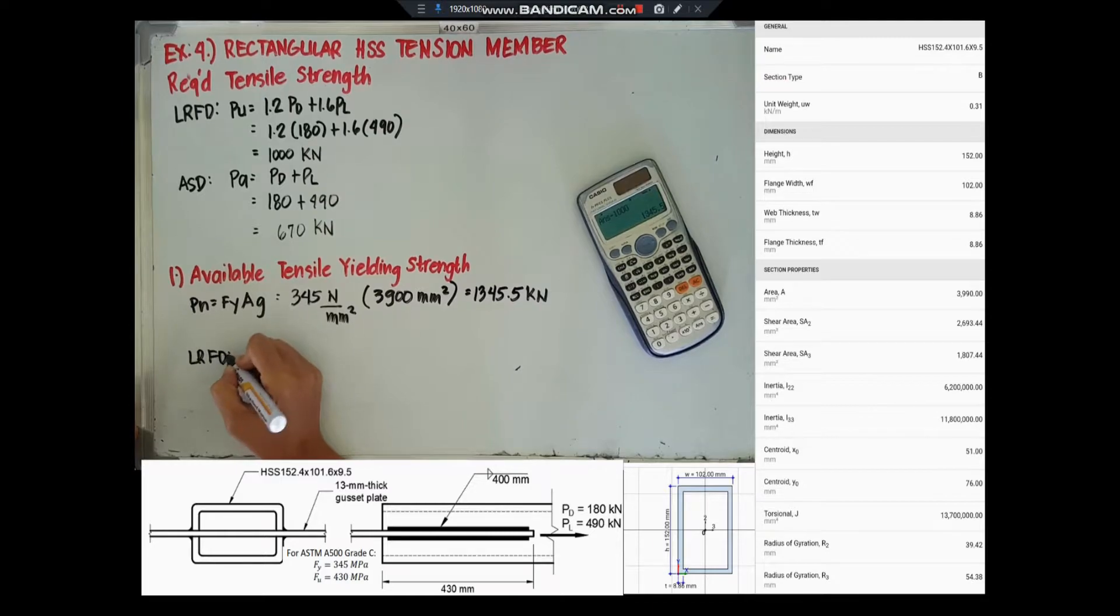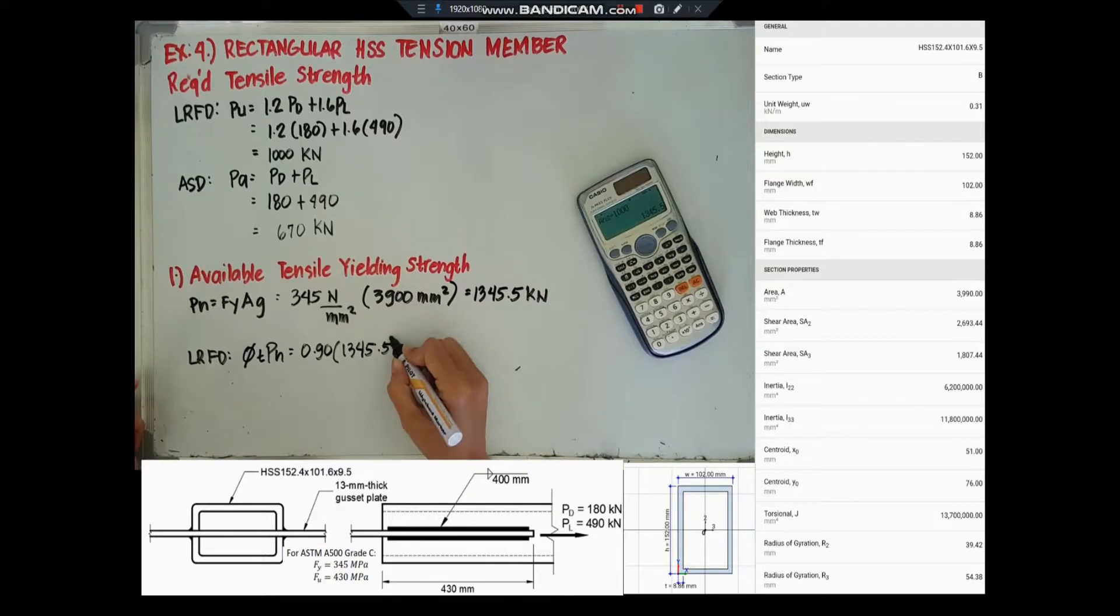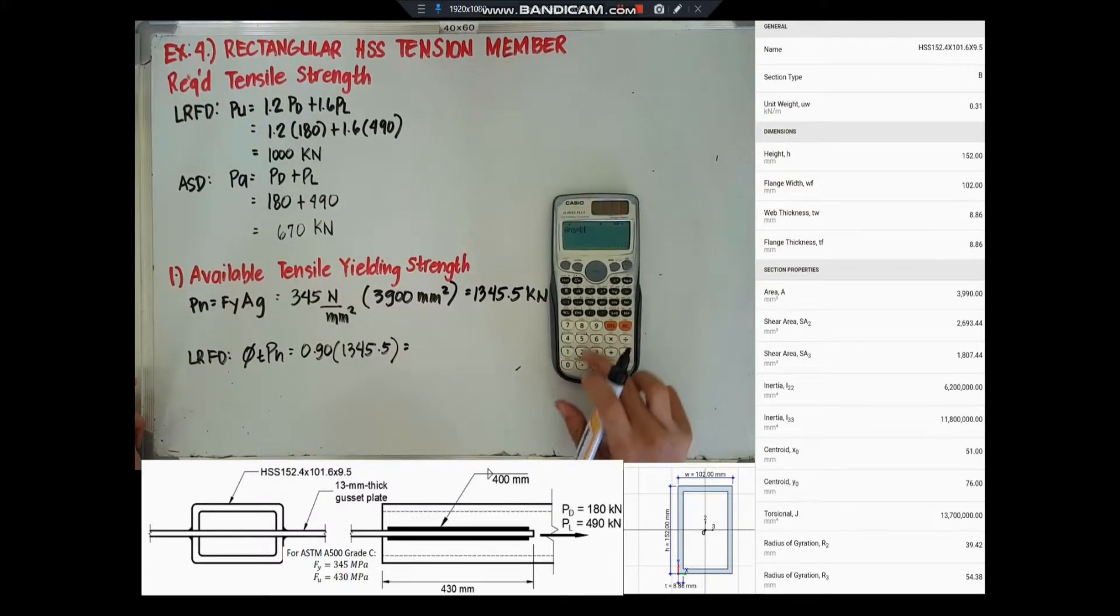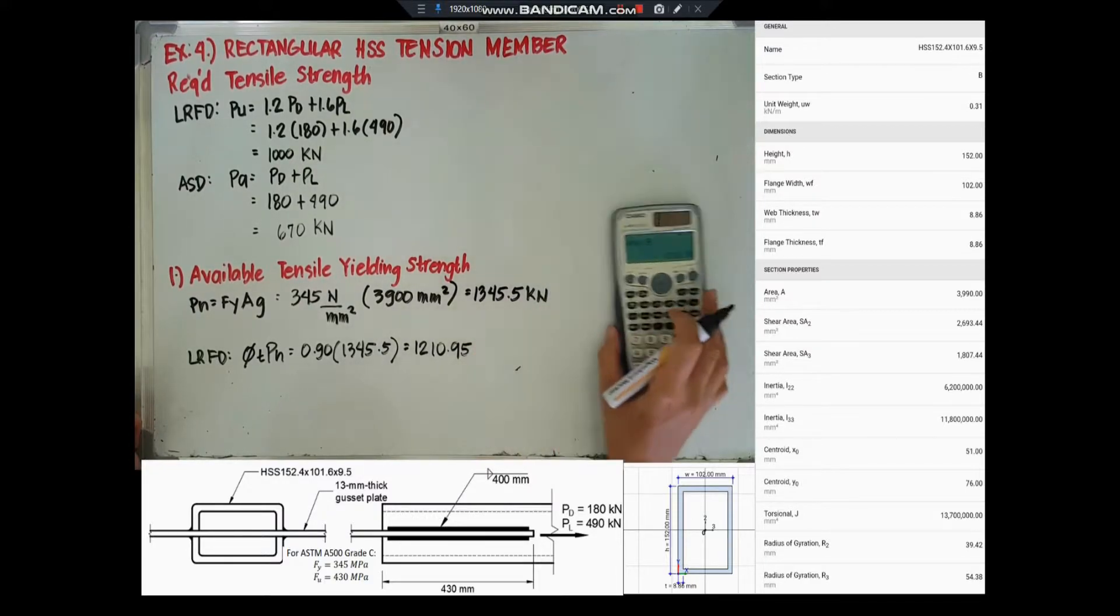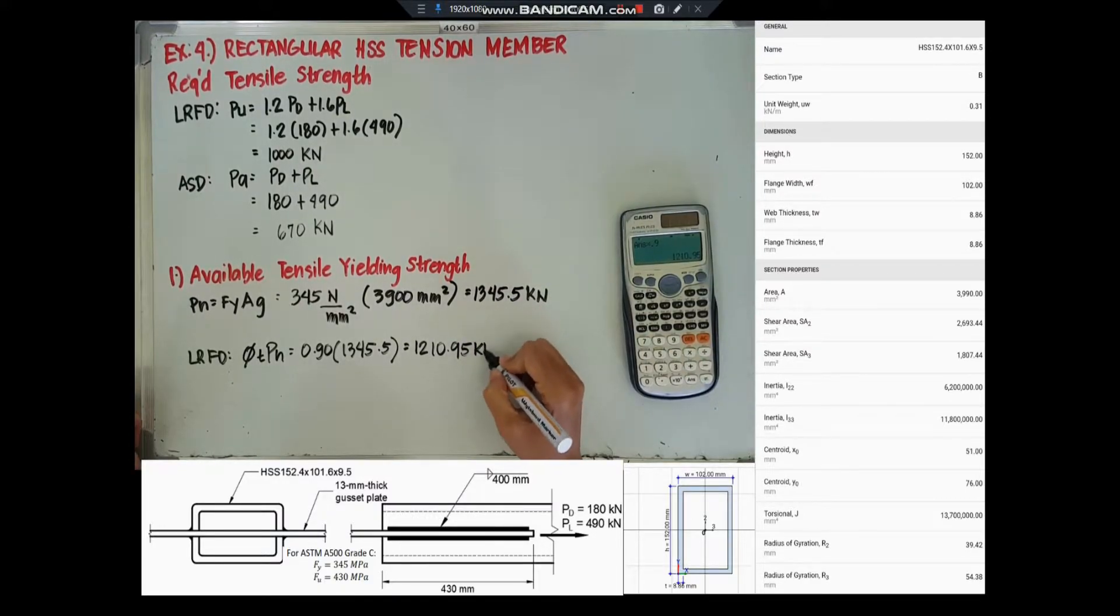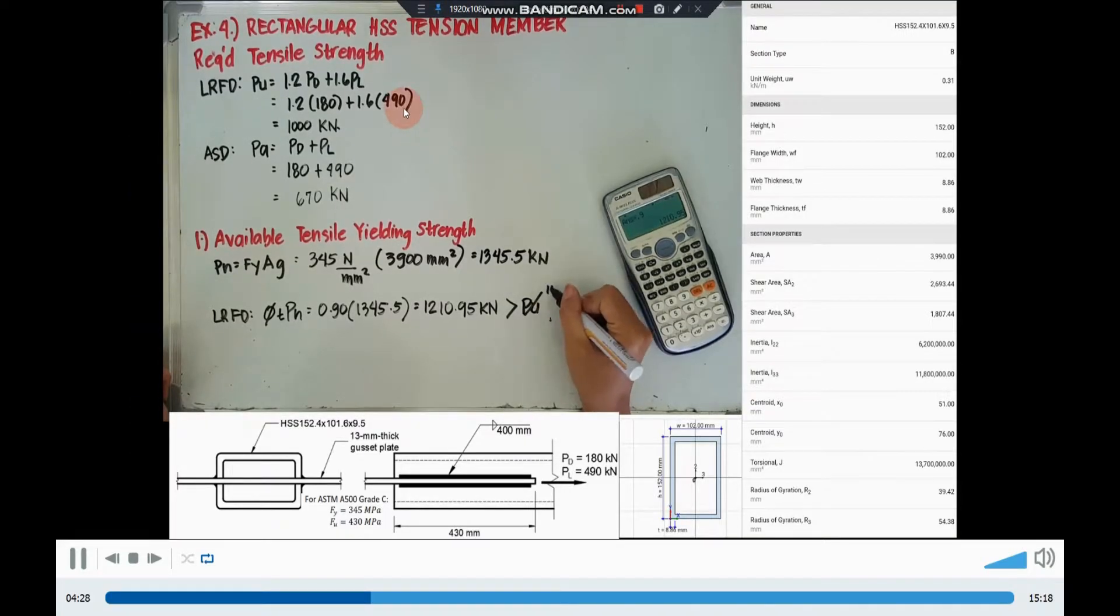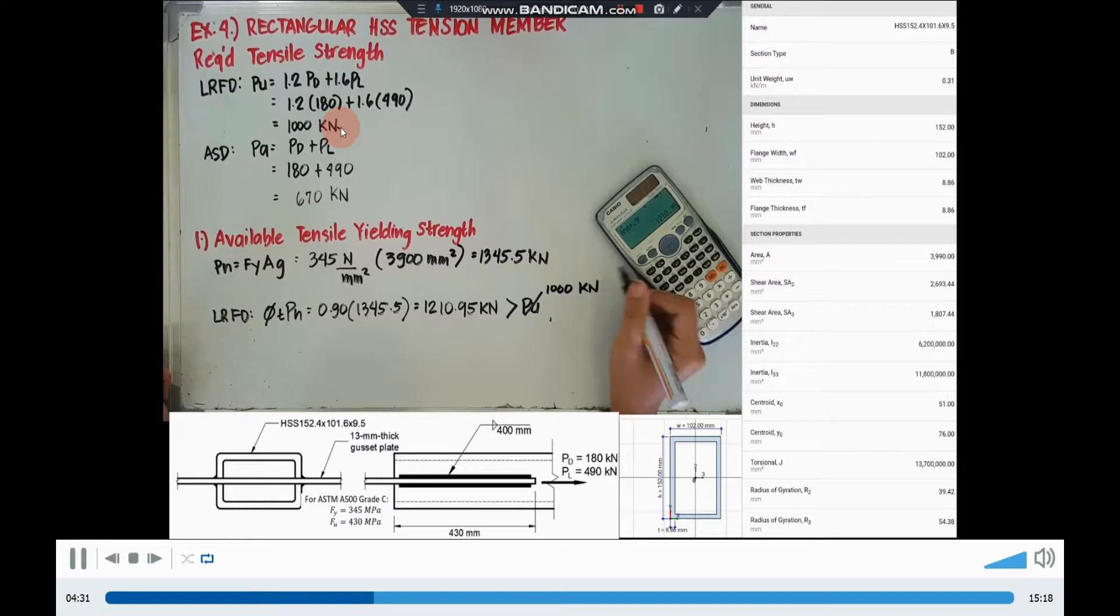For LRFD, we will multiply it with 0.9, so it is equal to 1,210.95 kN. Comparing it with the required tensile strength under LRFD, it is only 1,000 kN, so it is greater.